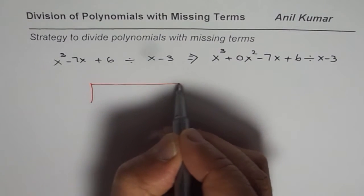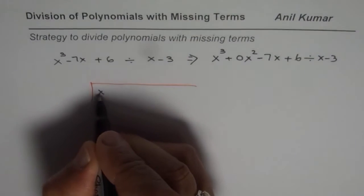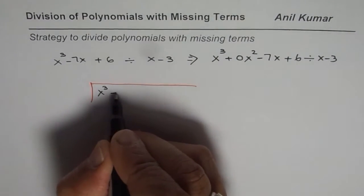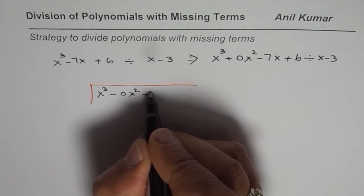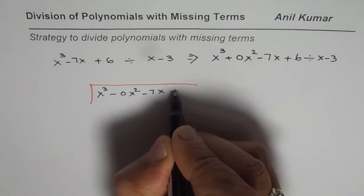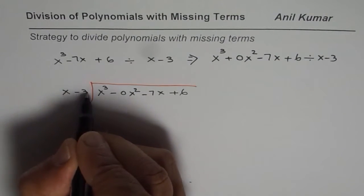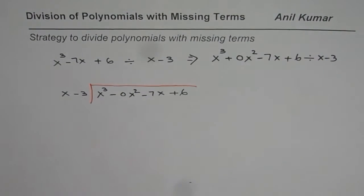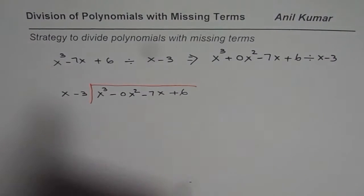So let's do this division now. We have already incorporated the term and now we have our equation as x cubed minus 0x squared. You will soon see the importance of this 0x squared minus 7x plus 6. We are going to divide this by x minus 3. I have taken a very simple example because I want to teach you this strategy.